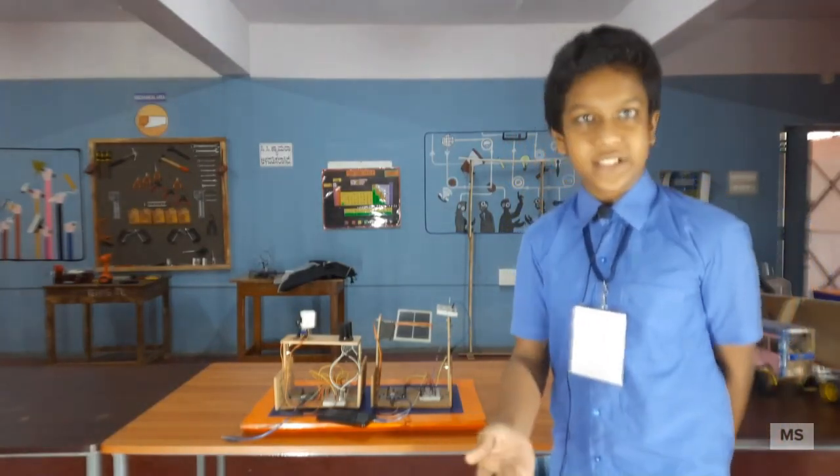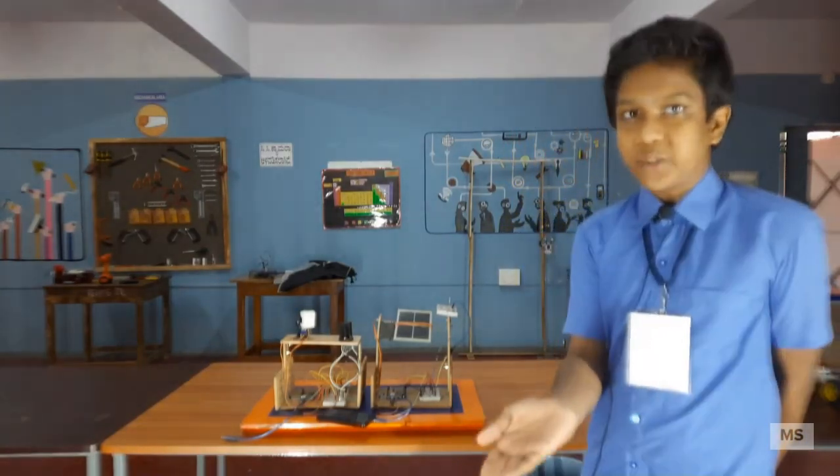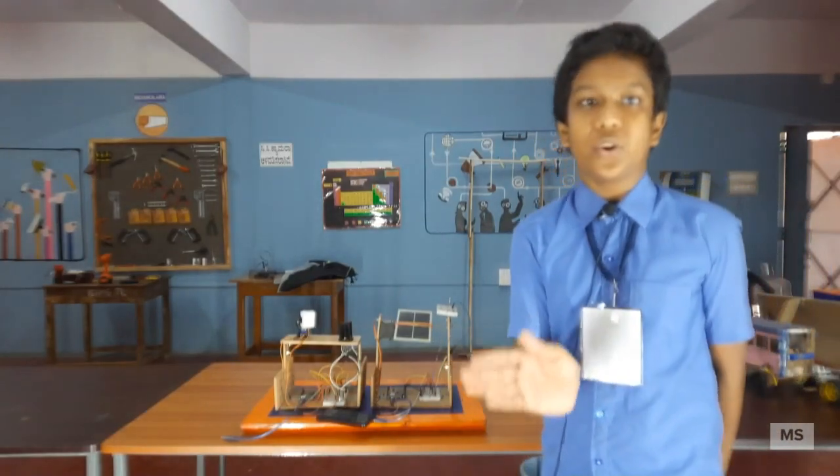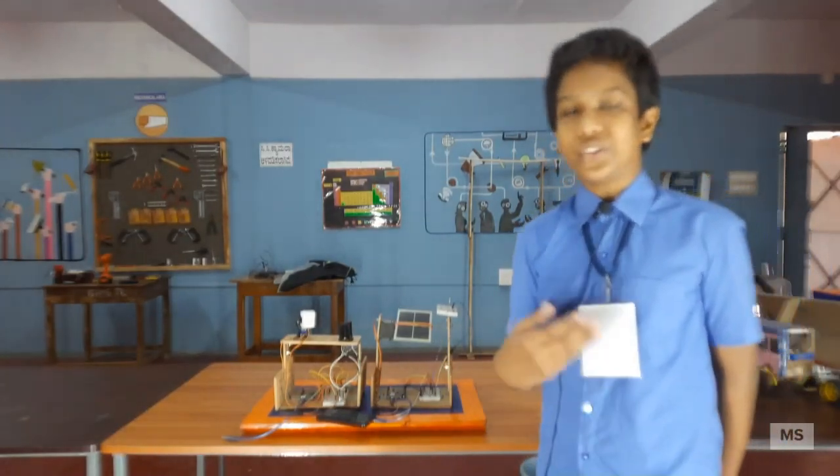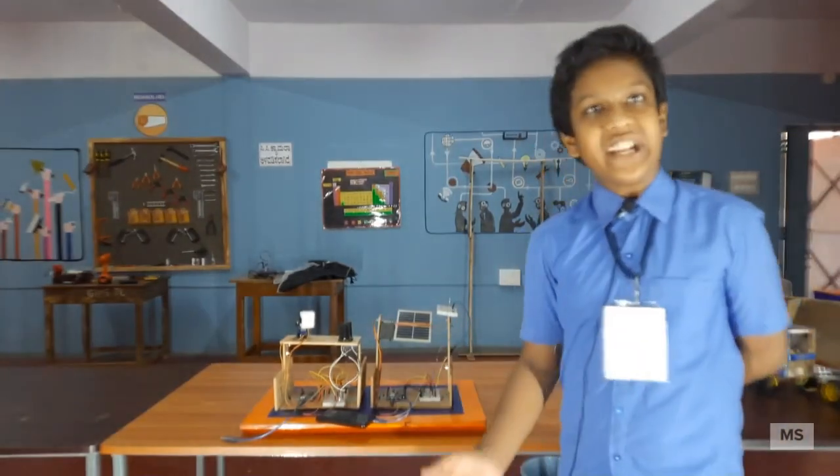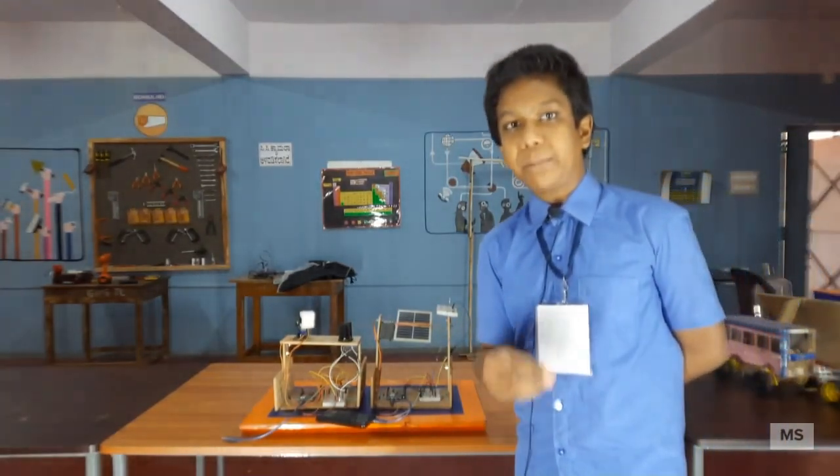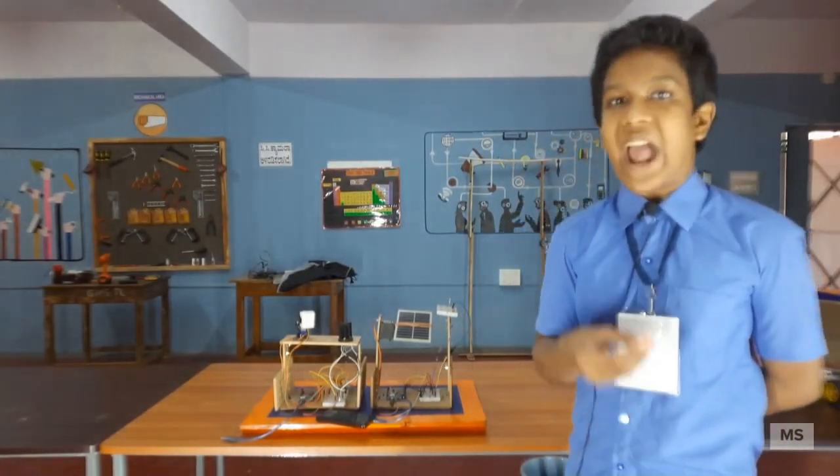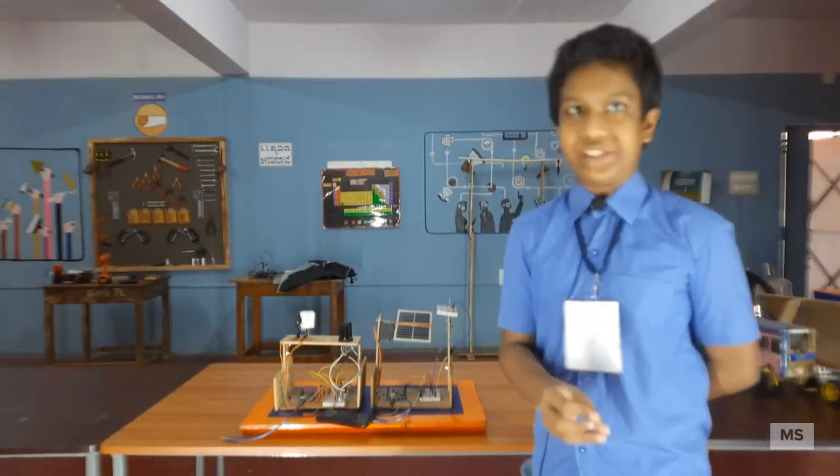It tracks the sun's location and turns the payload towards it. This is called solar tracker. Because it keeps orientation with the sun, solar panels can achieve the maximum amount of energy possible.